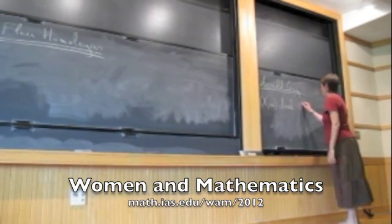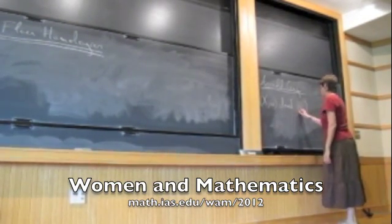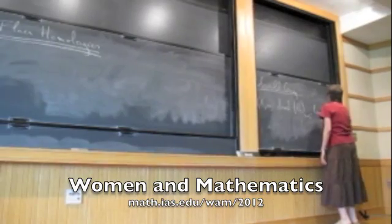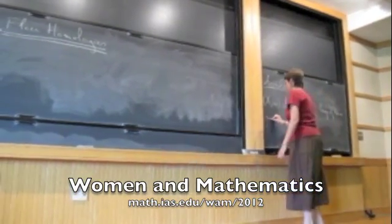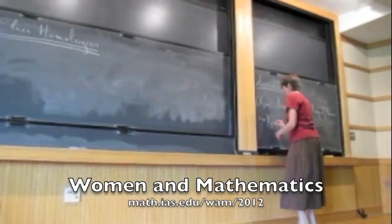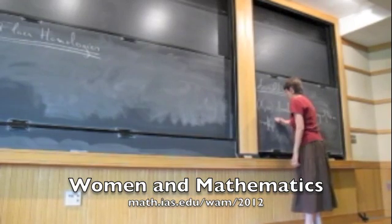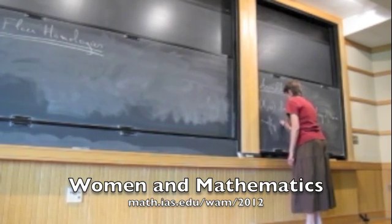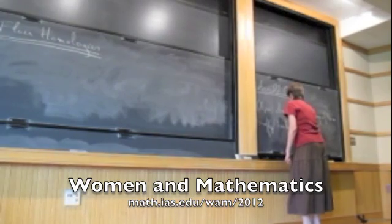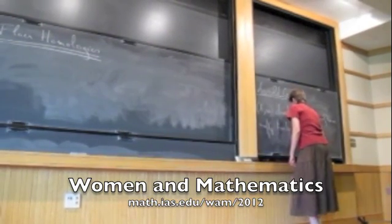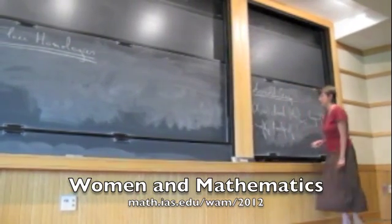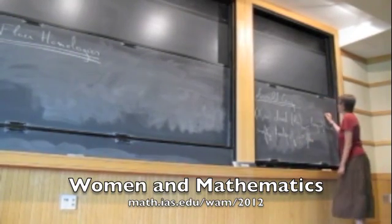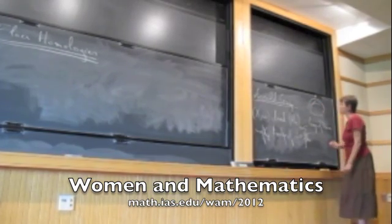So X is closed. And then we had a loop of Hamiltonian functions, just a loop of functions. So this is a loop of Hamiltonians. And from this loop of functions I showed you last time, you get a vector field, a time-dependent vector field. It's called a Hamiltonian vector field.